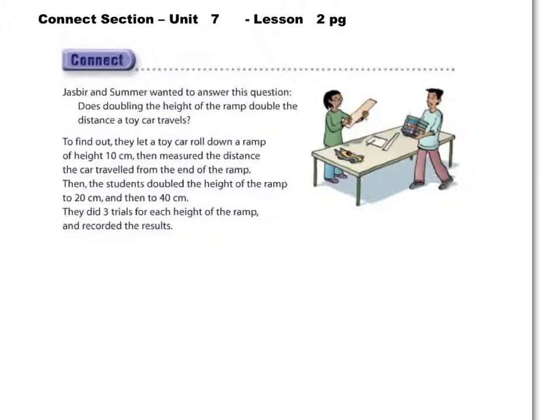Alright, so we have an example here. Jasbir and Summer wanted to answer this question: Does doubling the height of the ramp double the distance a toy car travels? To find out, they let a toy car roll down a ramp of a height of 10 cm, then measured the distance the car traveled from the end of the ramp. Then the students doubled the height of the ramp to 20 cm, then to 40 cm.